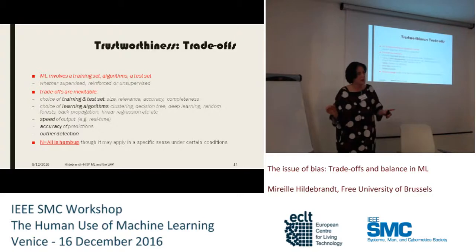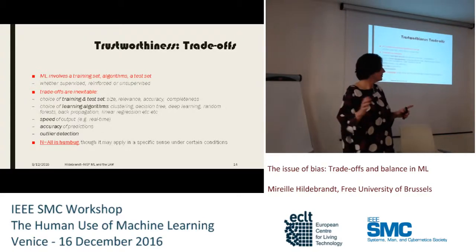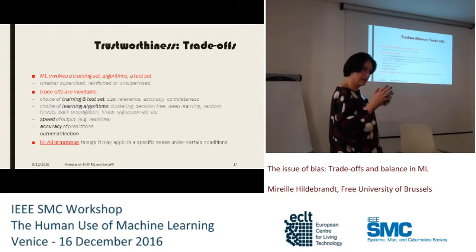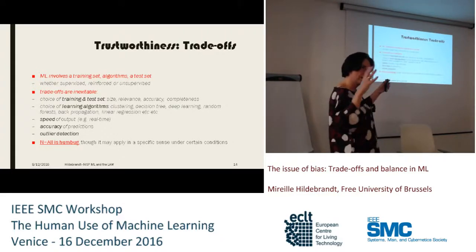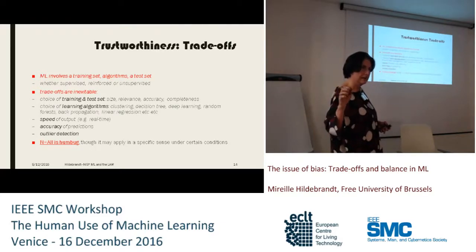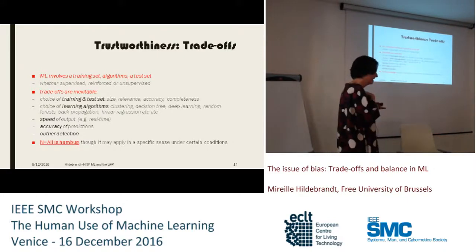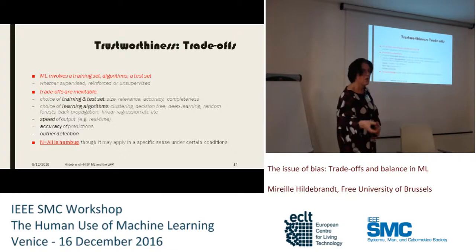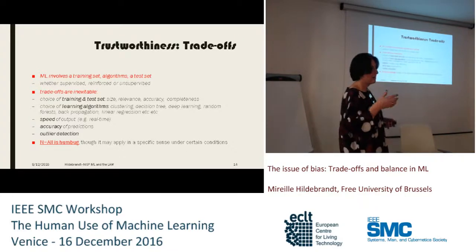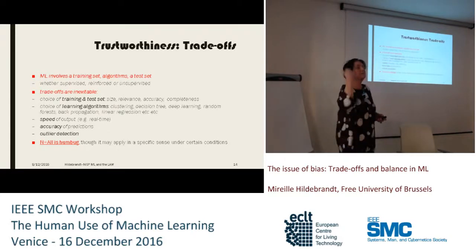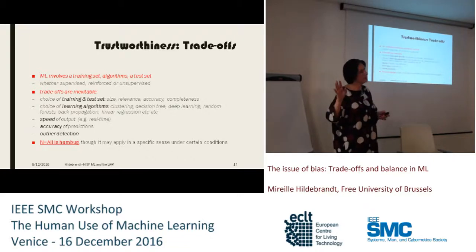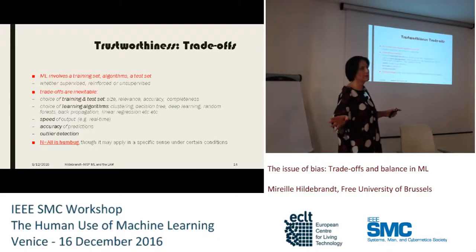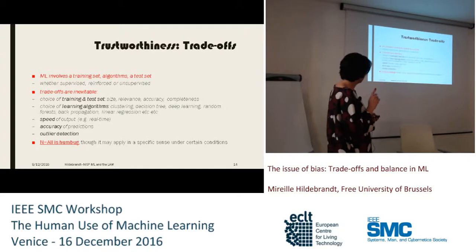There is a book called 'Big Data Revolution' built on one assumption: 'n is all.' I was surprised — it's total humbug, and no data scientist actually believes that. But this book has influenced policymakers, who tell me: if you have enough data, all the error just disappears, so we must abandon purpose-binding. I believe this is a dangerous book — it's the sort of book politicians read.